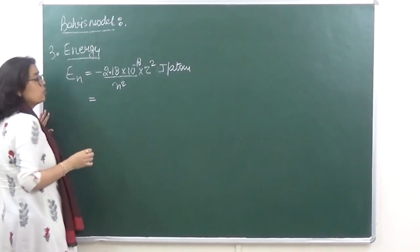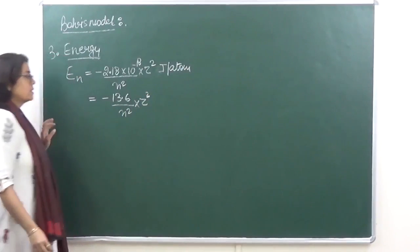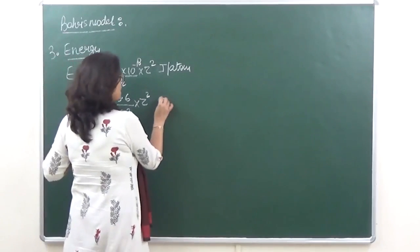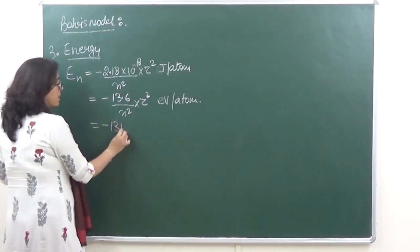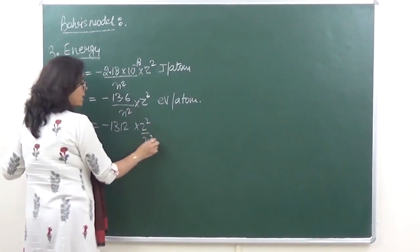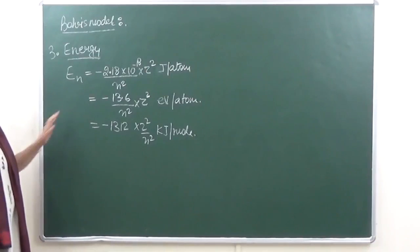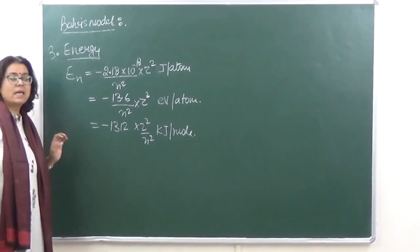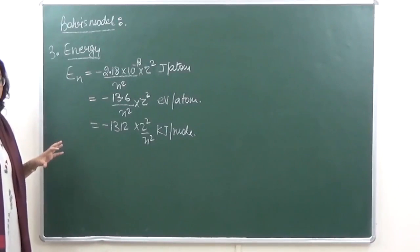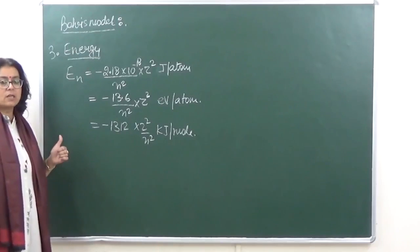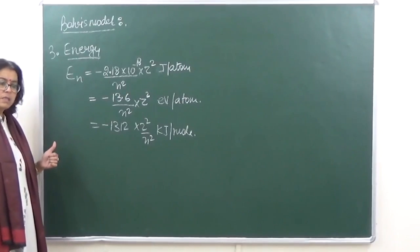When we are converting this into another unit, then it becomes minus 13.6 upon n square into z square. This is in electron volt per atom. And third, minus 1312 into z square upon n square kilojoules per mole. So this is what we have done.